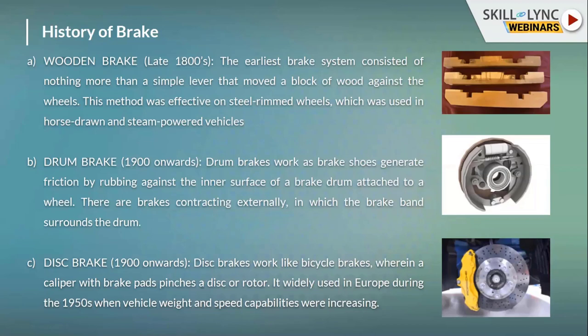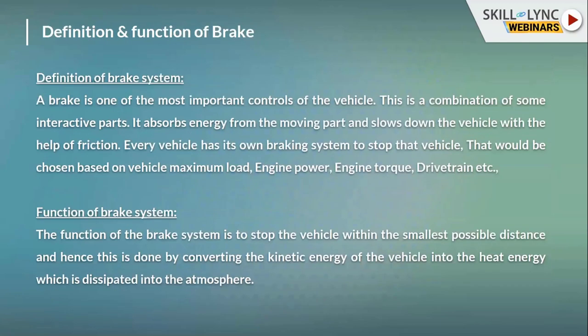The disc brake system also consists of two major components: one stationary and one rotating. The stationary part is the caliper unit, which contains the brake pads, and the rotating part is the disc. When we apply the brake, the caliper unit presses against the disc, reducing vehicle speed and halting the vehicle. These are the brake systems that have evolved over the centuries.